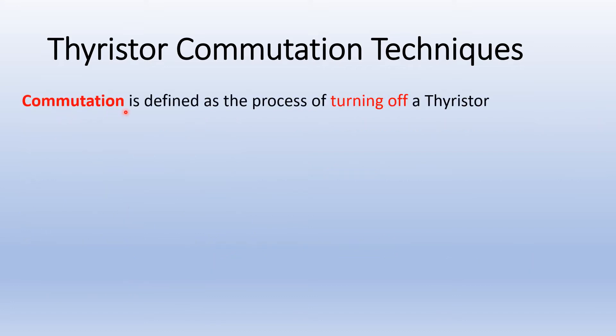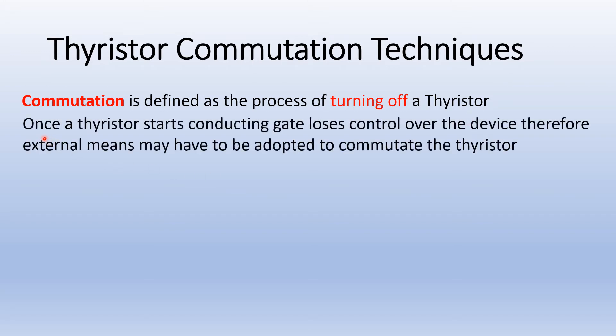Commutation is defined as the process of turning off a thyristor. Once a thyristor starts conducting, gate loses control over the device. Therefore, external means may have to be adopted to commutate the thyristor.